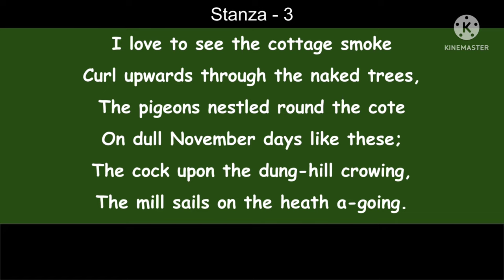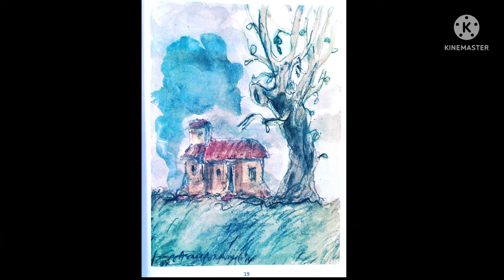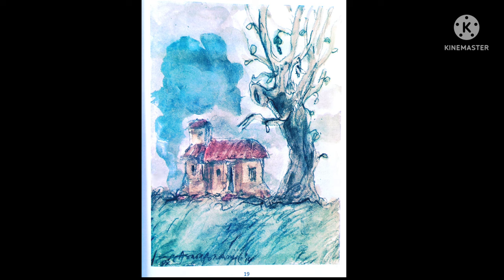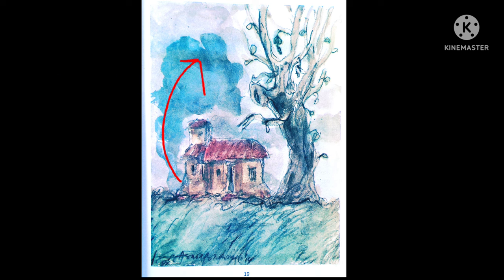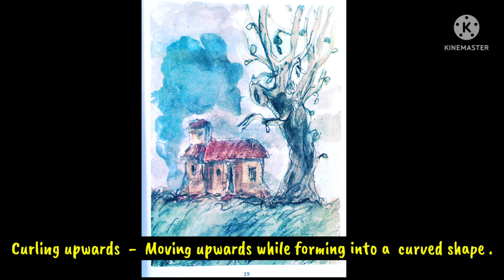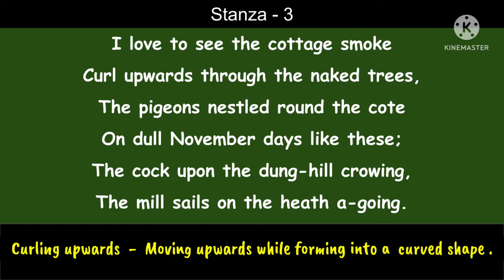Now begin with the first line: 'I love to see the cottage smoke.' There is a cottage. You can see the picture on page number 19 — this is a picture of a cottage from the 19th century. From the cottage, smoke is emitting and coming out. The cottage smoke is curling upwards through the naked trees.